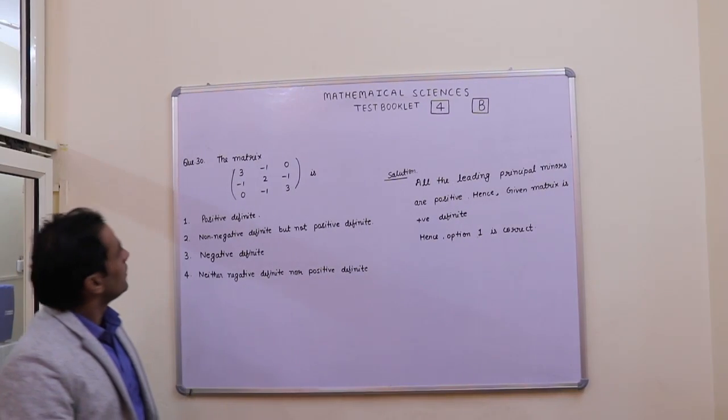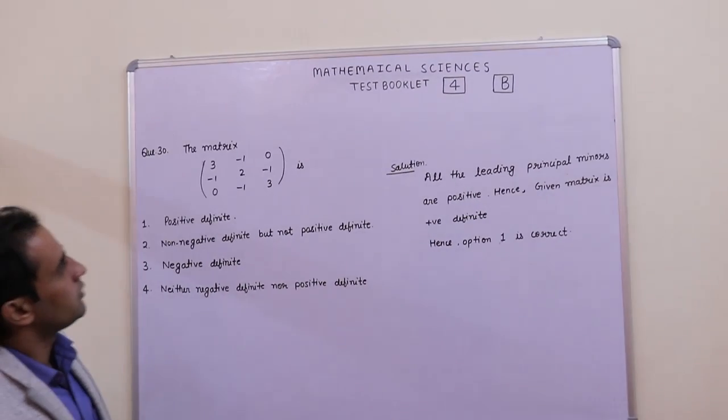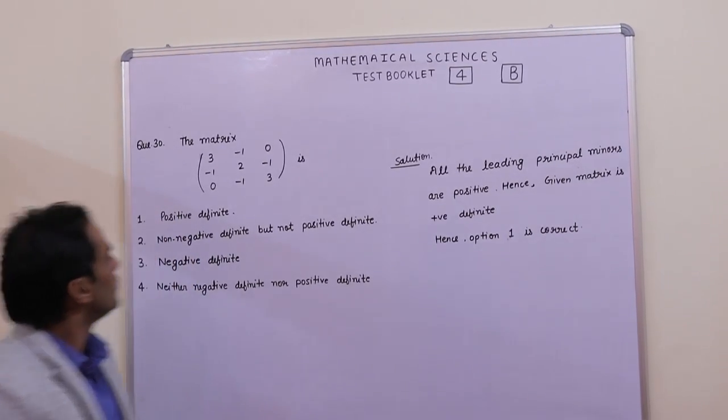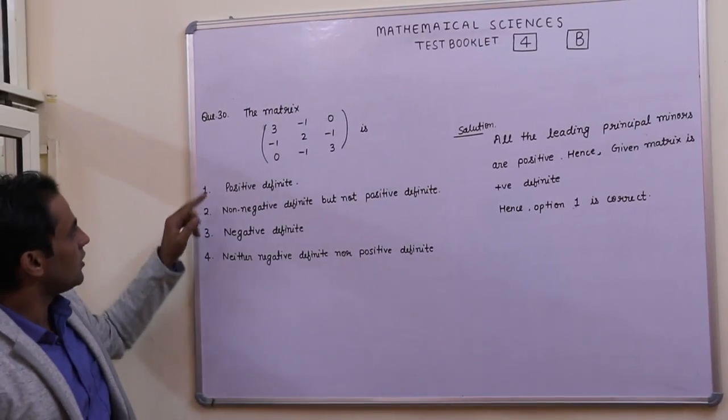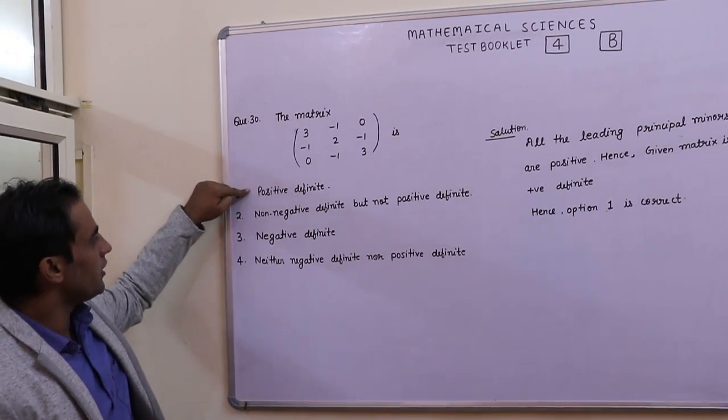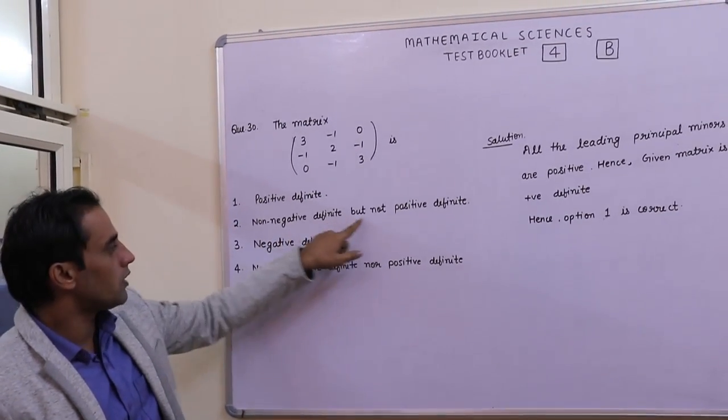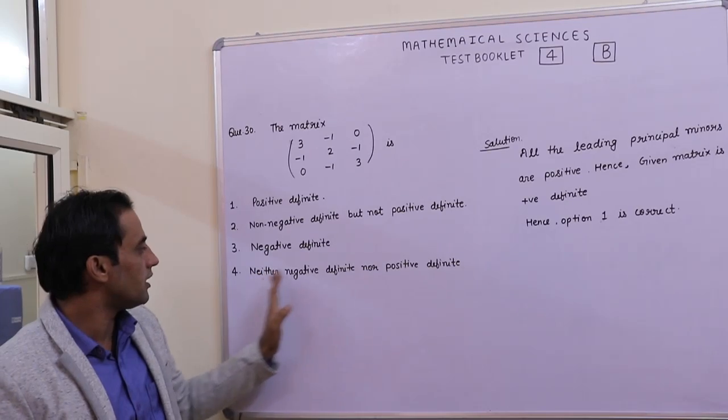Let's start with question number 30. Test booklet code is B. The given matrix is a 3x3 matrix, and the options are: positive definite, non-negative definite but not positive definite, negative definite, or neither negative definite nor positive definite.